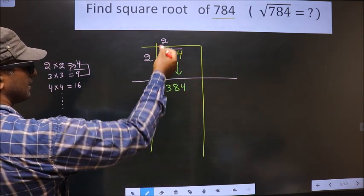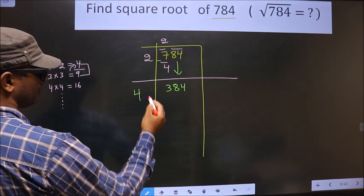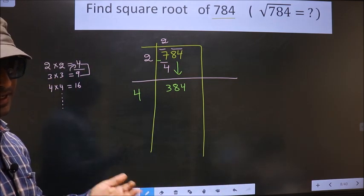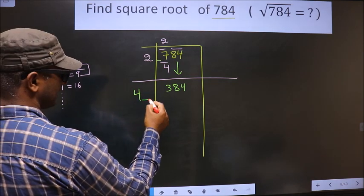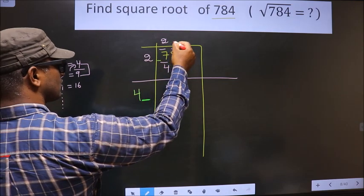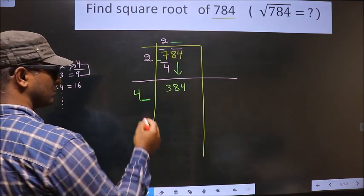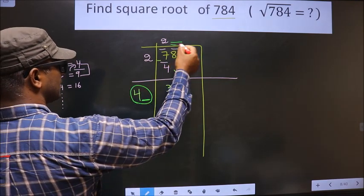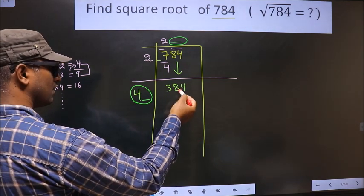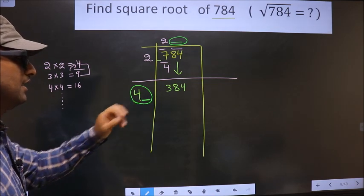Now here you should add these two numbers, that is 2 plus 2 is 4. Next, now here we should write a number. Whatever number you write here, here also you should write the same number. And also when you multiply this number and this number, you should get a number equal to this or close to this. So now let us find the number here.